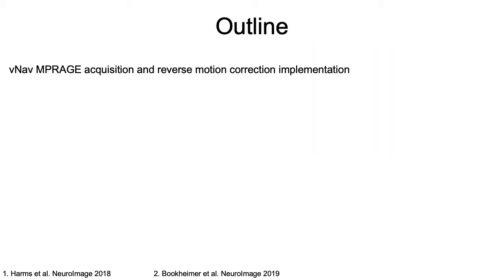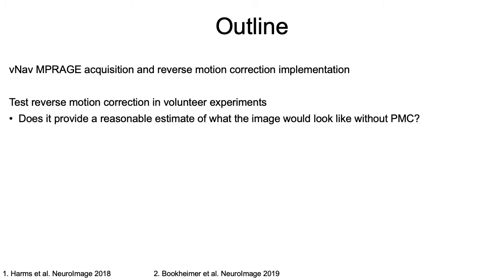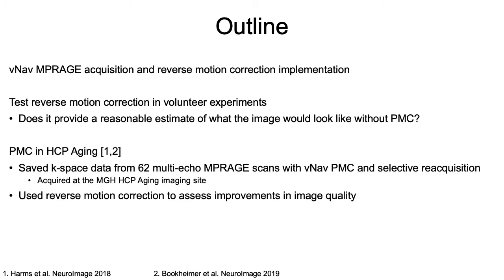In the rest of the talk I'll quickly go over the VNAV MP-rage scan and how we implemented reverse motion correction, show how we tested reverse motion correction in volunteer experiments to check if it provides a reasonable estimate of what the image would have looked like without PMC, and then assess prospective correction in the HCP aging data where we saved k-space data from 62 multi-echo MP-rage scans using VNAV PMC and selective reacquisition.